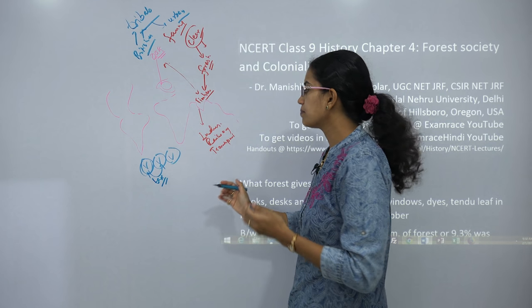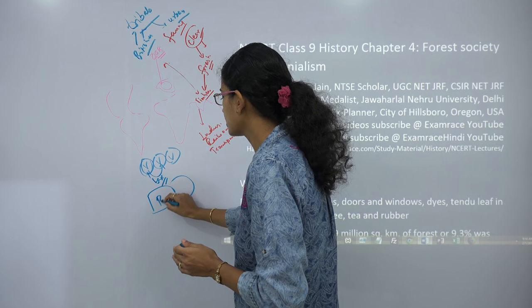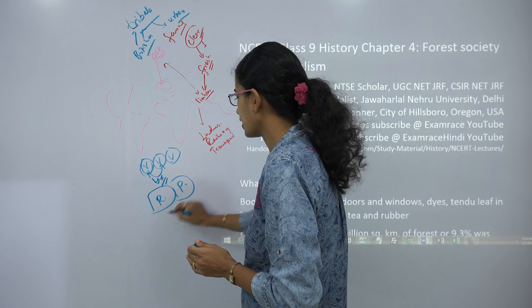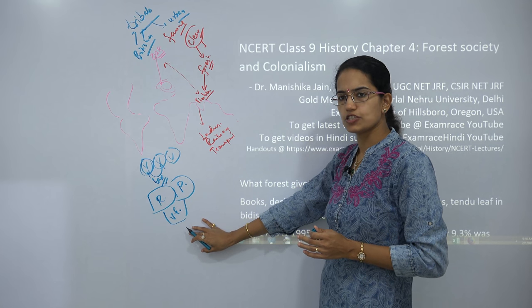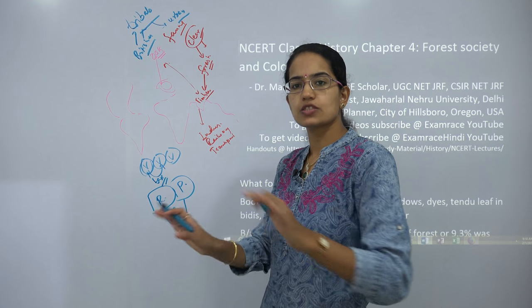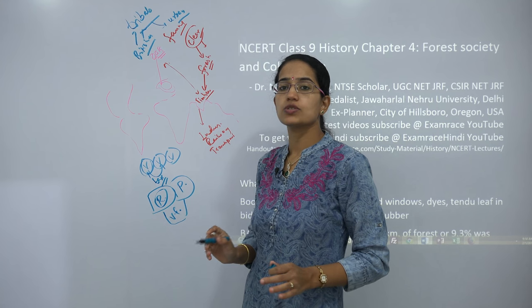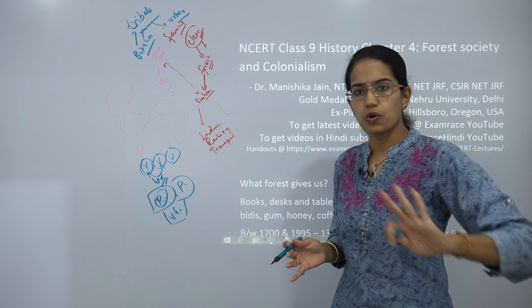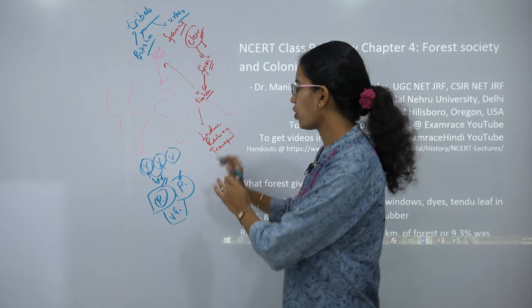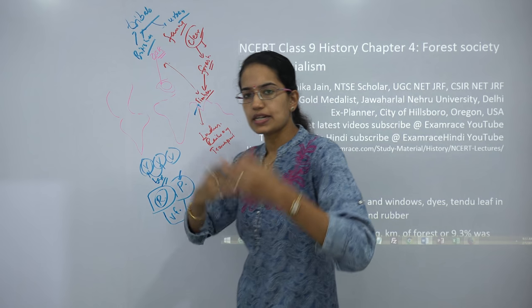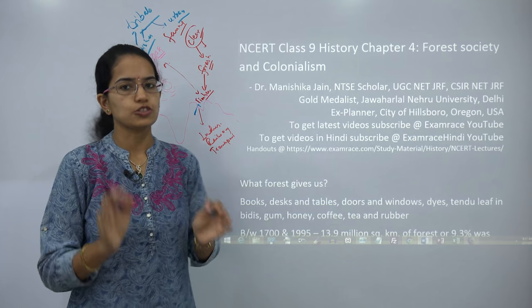When the Britishers came, they demarcated areas into three kinds of forests. One was the reserved forest — areas where villages were not allowed to go at all. The second was the protected forest — areas which were protected for the purpose of utilization of materials such as wood and timber. The third was the village forest — regions where villages were given the rights to carry out activities.